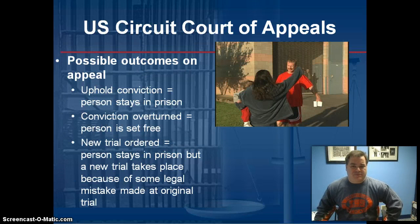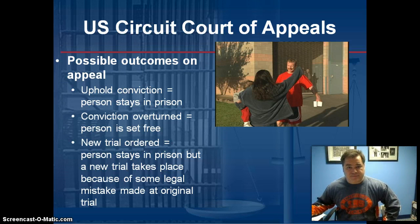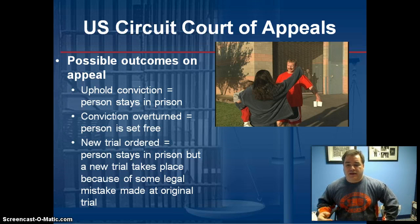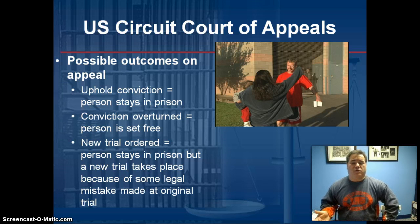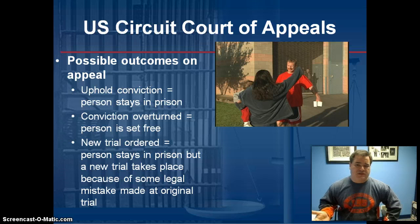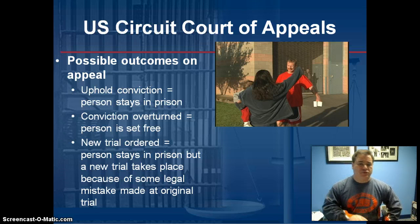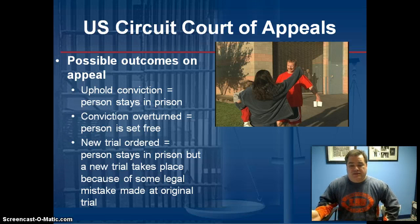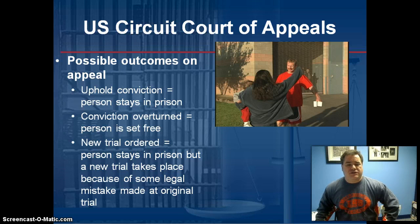The possible outcomes on an appeal are: the court could uphold the conviction, meaning the person stays in prison; they could overturn the conviction and the person is set free; or a new trial could be ordered, where the person continues serving their time but the case is retried before a new jury because some legal mistake was made at the original trial.